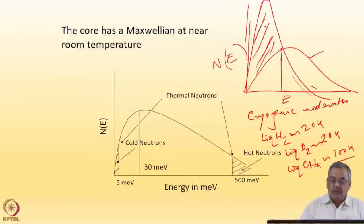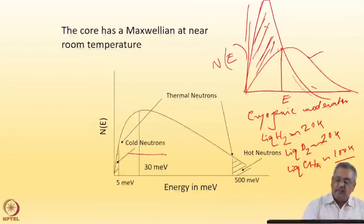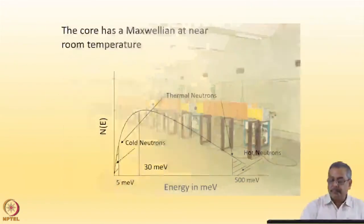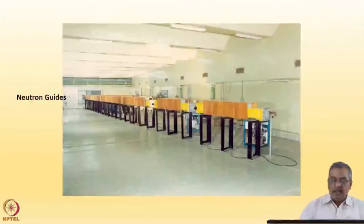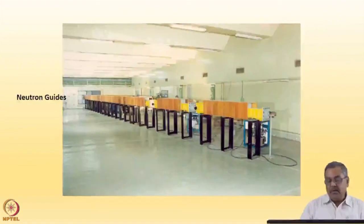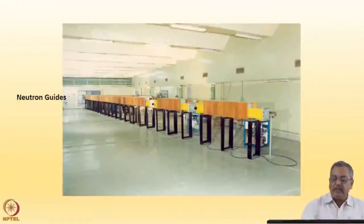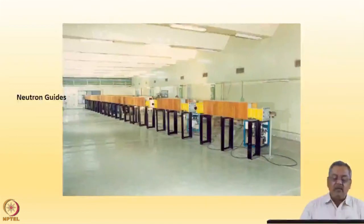These are known as cold neutron sources, which give us cold neutrons. I will show you a photograph — neutrons are transported out through neutron guides.